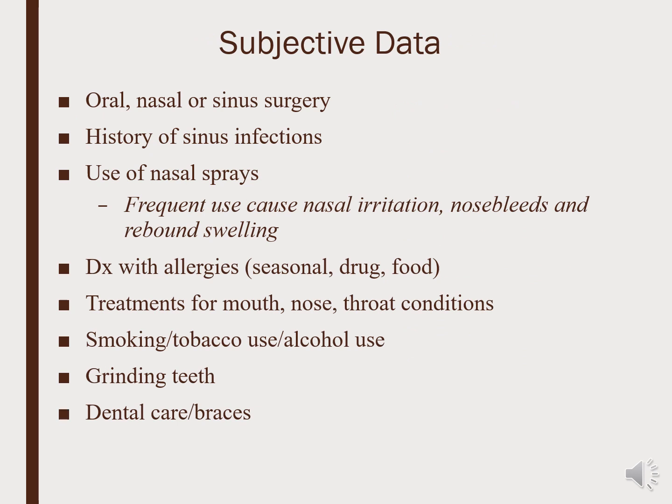When taking a nursing history for these organ systems, we ask whether the patient has had surgery in the past, any history of frequent sinus infections, or whether they use nasal sprays, because nasal sprays can cause rebound sinus issues. History of allergies, any frequent treatments for mouth, nose, or throat, smoking and lifestyle practices, and any dental appliances such as braces, dentures, or dental care.